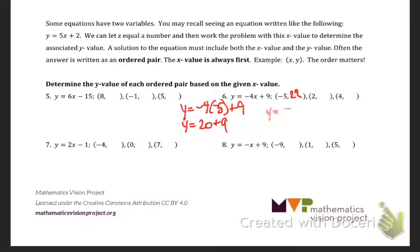Y equals negative 4 times 2 plus 9. So y equals negative 8 plus 9. Y should equal negative 8 plus 9 gives me a positive 1. And last but certainly not least, y equals negative 4 times 4 plus 9. Y equals negative 16 plus 9. And negative 16 plus 9 should give me negative 7.